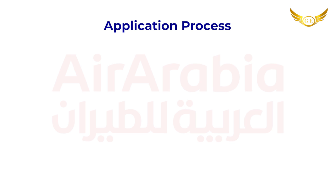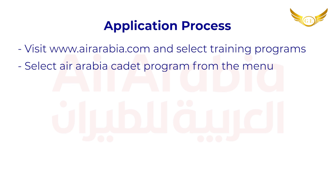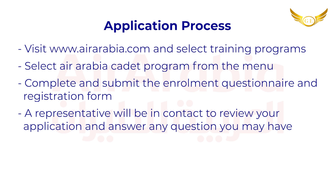For those of you who are wondering how to apply for this program, the procedure for enrollment is: visit www.airarabia.com, select training programs, select the Air Arabia Cadet Program from the menu, and complete and submit the enrollment questionnaire and registration form. A representative will be in contact to review your application and answer any questions. After this, wait for the email. When you receive a confirmation email, send in the documents mentioned in the application, which we have already covered in our previous video.